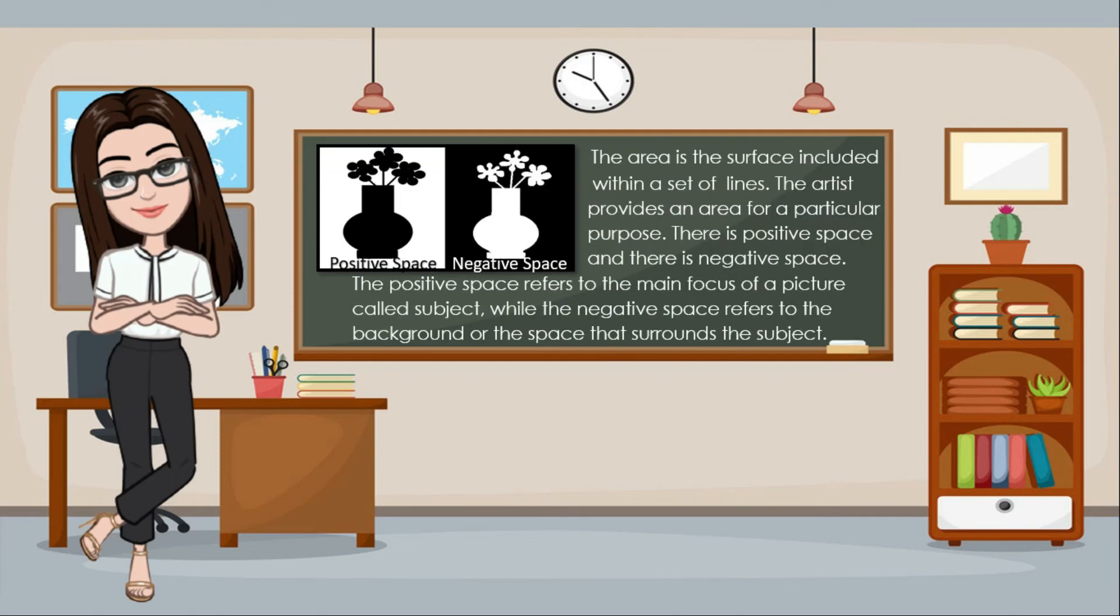The area is the surface included within a set of lines. The artist provides an area for a particular purpose. There is positive space and there is negative space. The positive space refers to the main focus of a picture called subject. While the negative space refers to the background or the space that surrounds the subject.